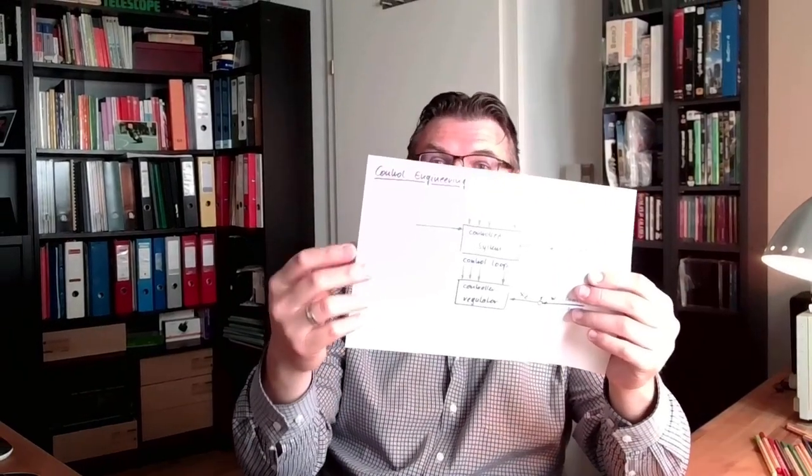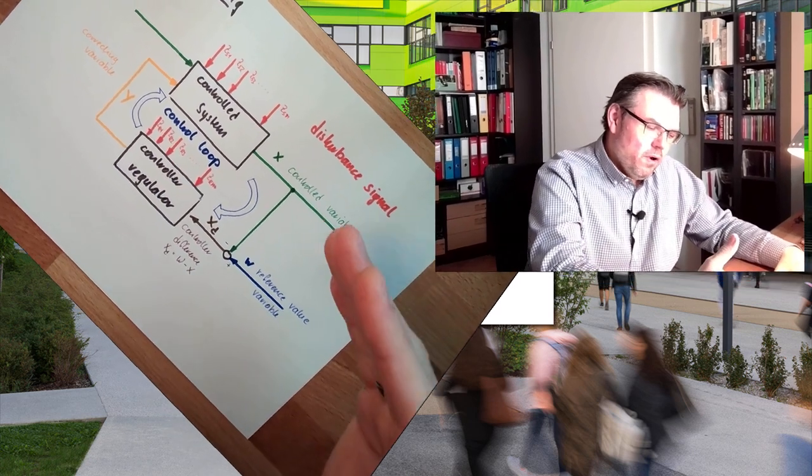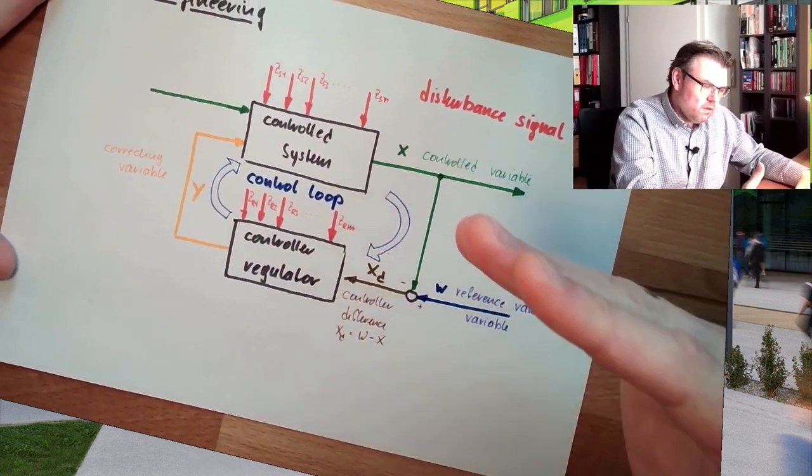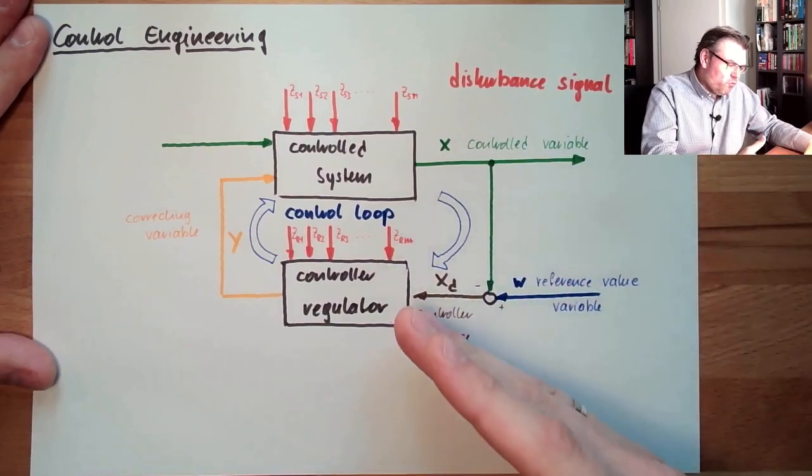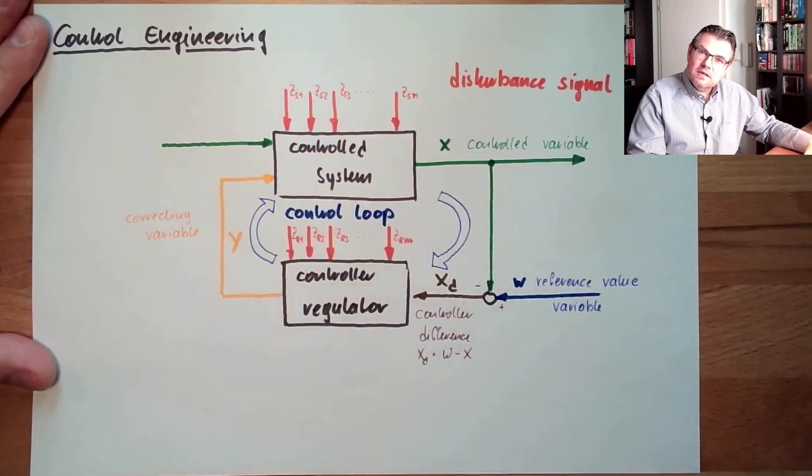Hello and welcome to a new video about control engineering. Last time we covered control engineering basics — how it looks, the control loop. Today we want to go a little bit more into detail about what controlling means and where it is used. So let's think again about what controlling means. We have a controlled variable, a controller, and a controlled system — this is what we talked about last time.